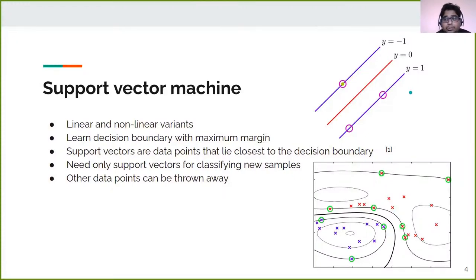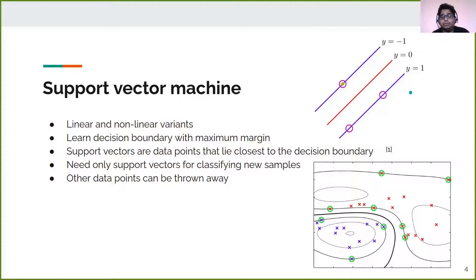For example, when a new data point colored blue comes in, we say it belongs to class 1 because it falls on the right of the y equal to 1 line. In the bottom image, we can see the non-linear variant of support vector machines. The dark black line gives a non-linear curve separating the blue and red classes. These are the support vectors belonging to two different classes.